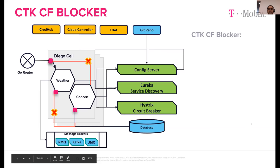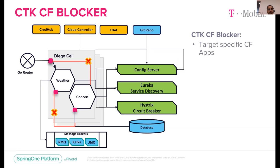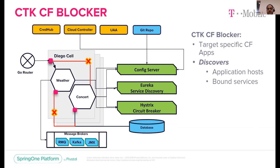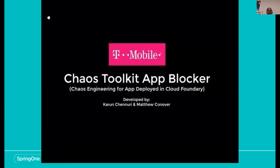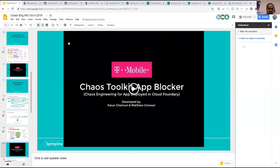How we do that today is CTK CF Blocker — a new driver we wrote to target specific CF app instances. What it does is discover where your application is running, then discover what services your application is bound to. In this case, weather and concert microservices are bound to MySQL database, config server, Eureka, and a circuit breaker service. The CTK CF Blocker can also go into the config server that the app is bound to and bring it down. It primarily blocks all traffic to app instances and blocks traffic to bound services as well.